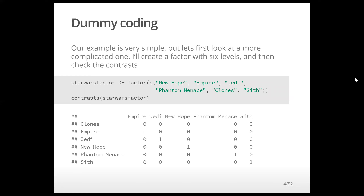Here's a slightly more complex version of dummy coding using the Star Wars idea. I'm looking at six Star Wars films set up as a factor. When I check the contrasts, the first reference category defaults to alphabetical order in R — you can change it. The first alphabetical entry is 'clones,' so that gets all zeros, and every other subsequent film gets a 1 for that particular parameter. So 'clones' is the reference category, and each column compares a film — Empire, Jedi, and so on — to clones.